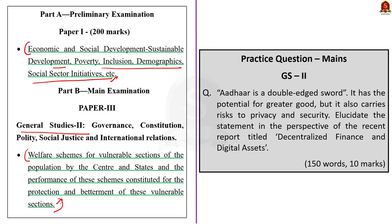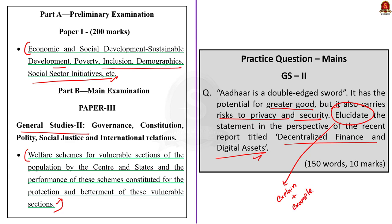Now let us start the discussion. Look at this question. Aadhaar is a double-edged sword. It has the potential for greater good, but it also carries the risk to privacy and security. Elucidate the statement in the perspective of the recent report titled Decentralized Finance and Digital Assets. The key word here is 'elucidate.' Our response for these types of questions is simple — we just have to explain the statement in detail by giving suitable examples.